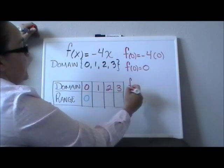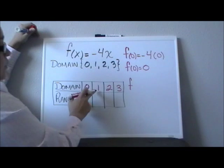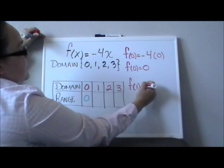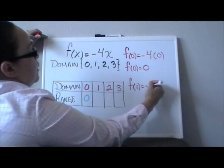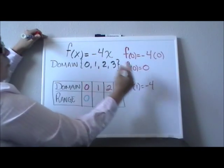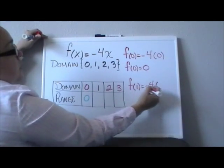So I will find f, but in this case instead of f of 0, I am going to find f of 1, because the value of my x is 1 now. So again, I am going to put negative 4, and instead of x I will write parenthesis 1.